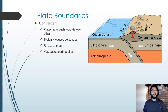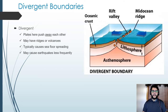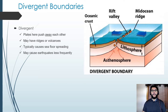Moving on to divergent boundaries — those are where the plates push away from each other. In the asthenosphere, there's movement of rocks coming up, which causes new rock to form. That's your typical mid-ocean ridge. You may see some earthquakes there, but it's a little less frequent because there's no collision or sliding of these plates directly against each other.